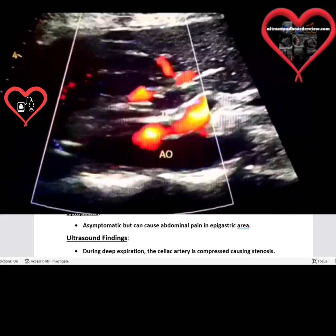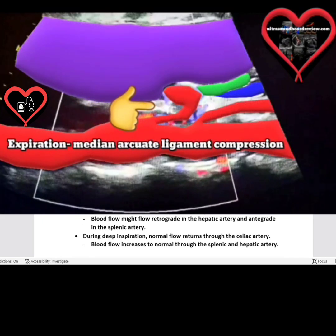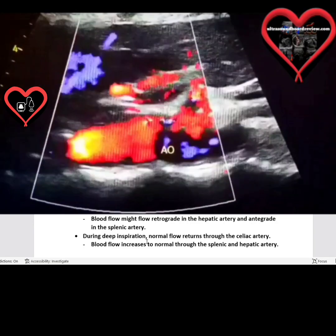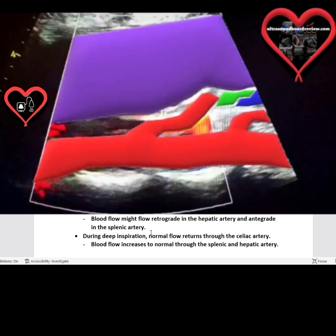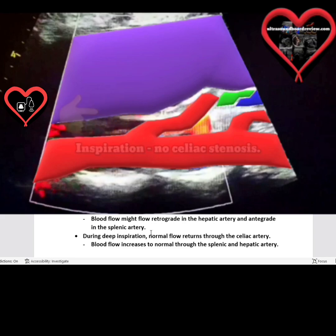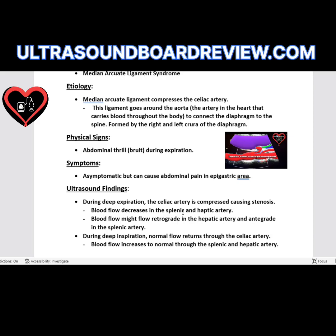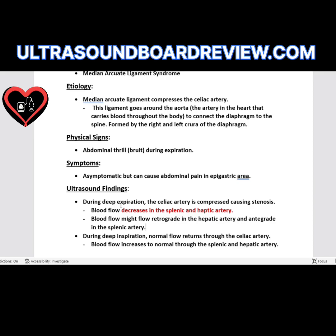During expiration, the celiac artery is compressed, causing a stenosis. During inspiration, the median arcuate ligament relaxes off the celiac artery and decompresses it, allowing blood to return to normal. While the median arcuate ligament is compressing the celiac artery during expiration, this decreases blood flow through the splenic and hepatic arteries. On your boards, they might say the patient breathes out or blows all their air out instead of saying expiration.